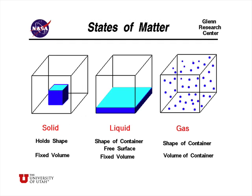A solid is something that will hold its shape at fixed volume. A liquid is something that will obtain the shape of the container but has a fixed volume, so it doesn't fill the container. A gas adopts the whole shape of the container and fills the whole volume of the container, because the molecules are really spread out from one another, as opposed to a liquid and solid where they're packed closely.